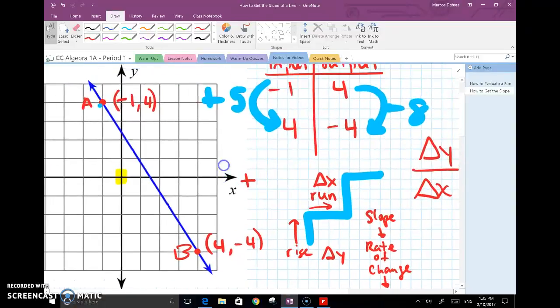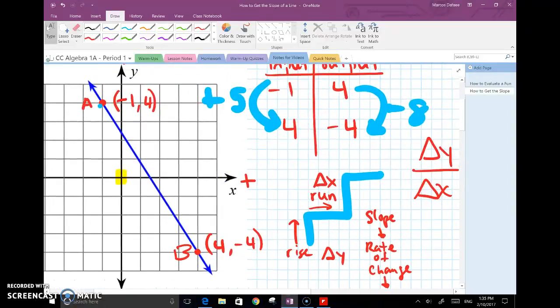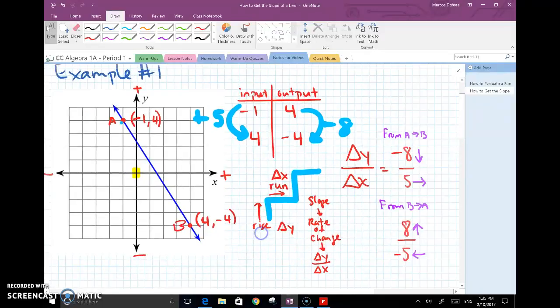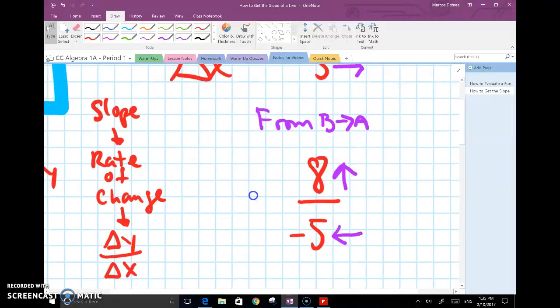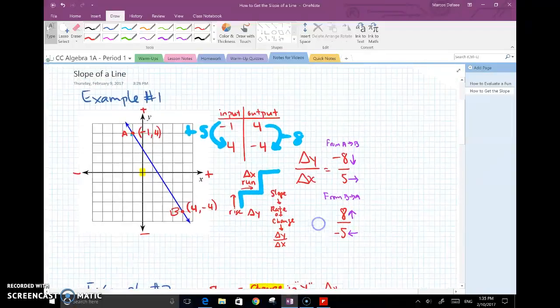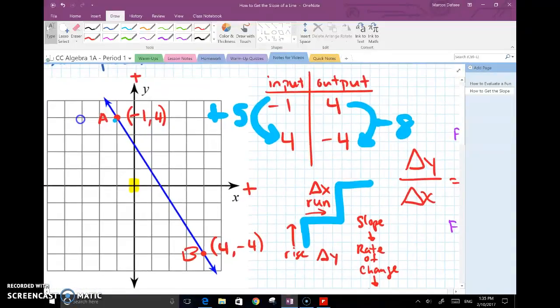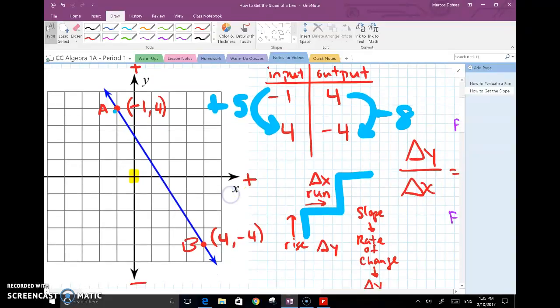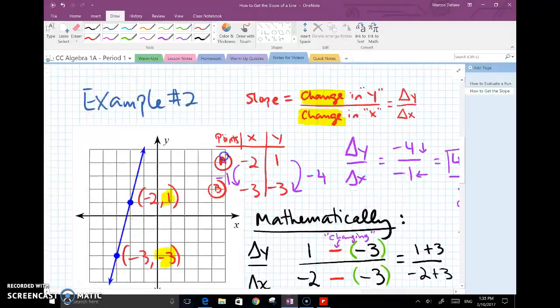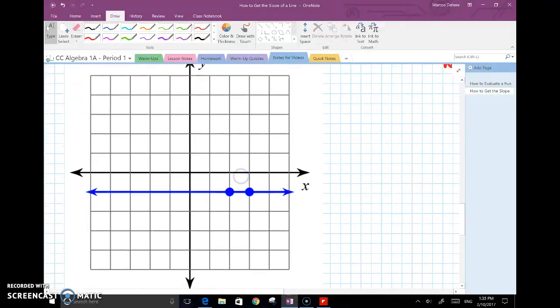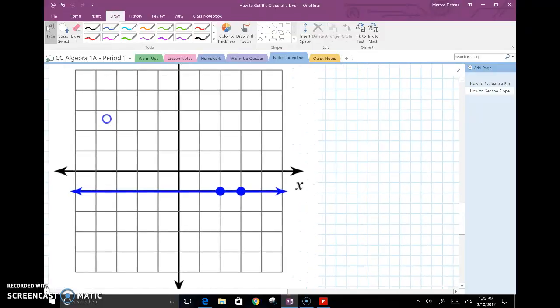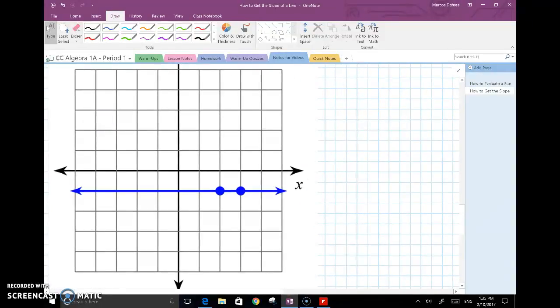In the first video, we looked at a line that is clearly decreasing or going down, if you think about it in terms of hiking. And when we finally got our slope for this, as you can see over here, our slope was negative 8 over 5. And that negative part corresponds to the line going down or decreasing. So we looked at a decreasing slope, a negative slope, an increasing slope, a positive slope